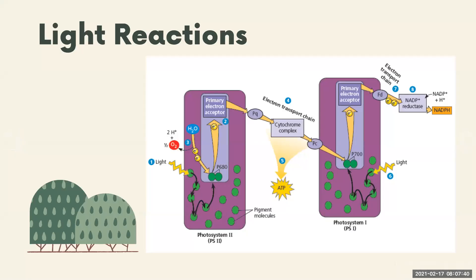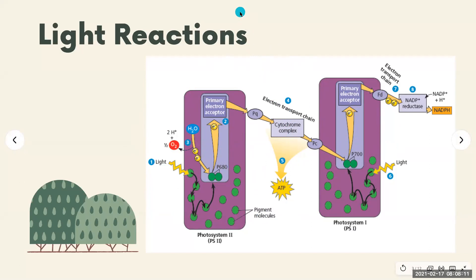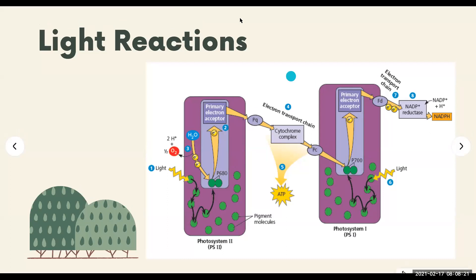Just a quick review about light reactions. Can you remember this figure? Can you tell me what type of electron flow is shown? We have two types of electron flow. This one involves two photosystems — photosystem 2 and photosystem 1 — and involves the production of oxygen, ATP, and NADPH. What type of electron flow is shown here? Very good, Ms. Linantud. It's linear electron flow.